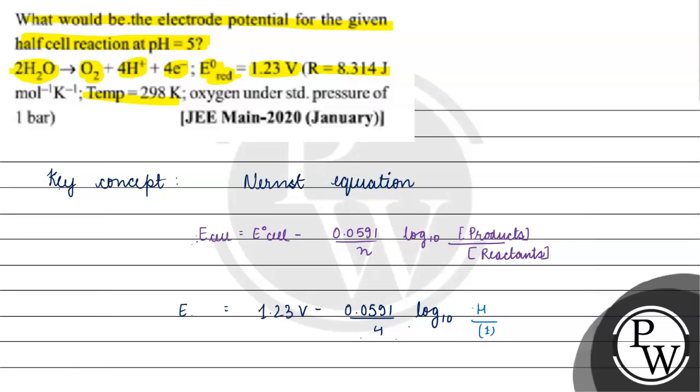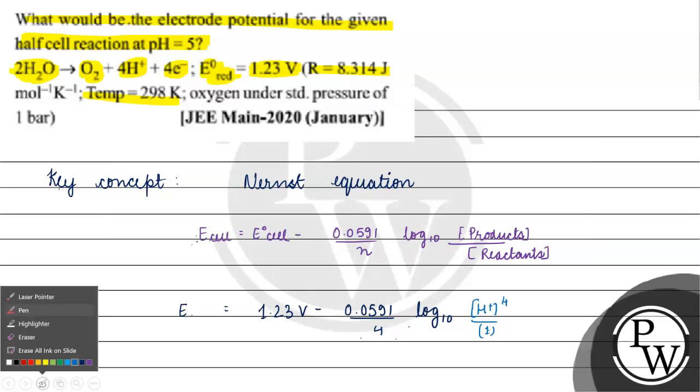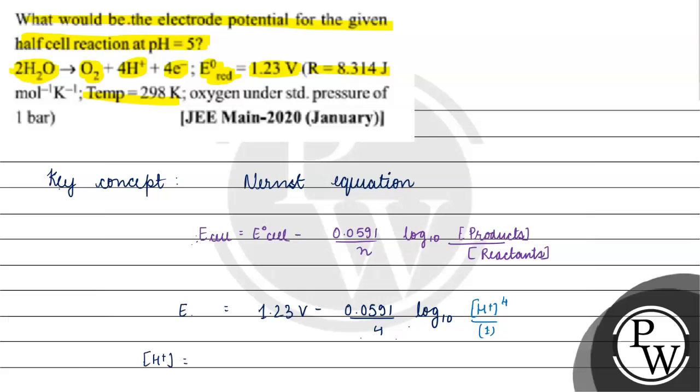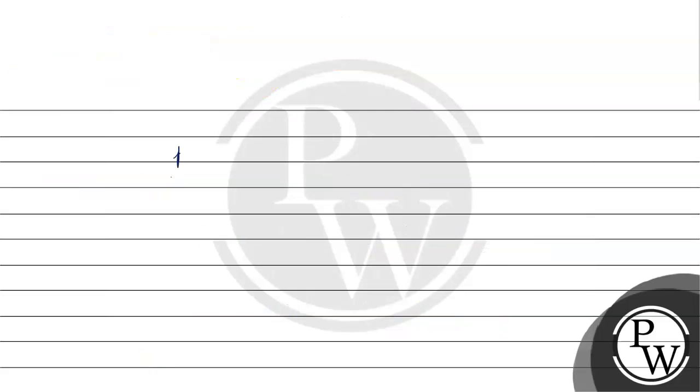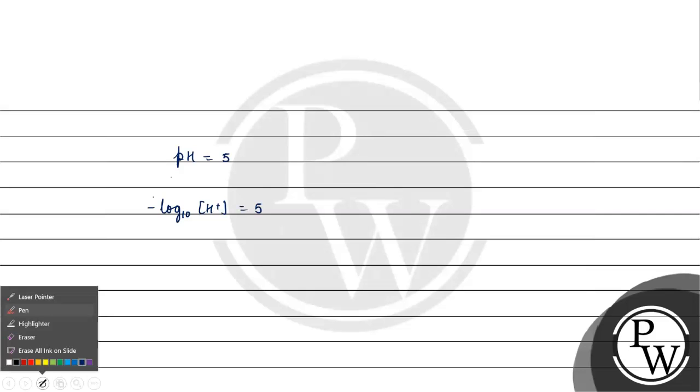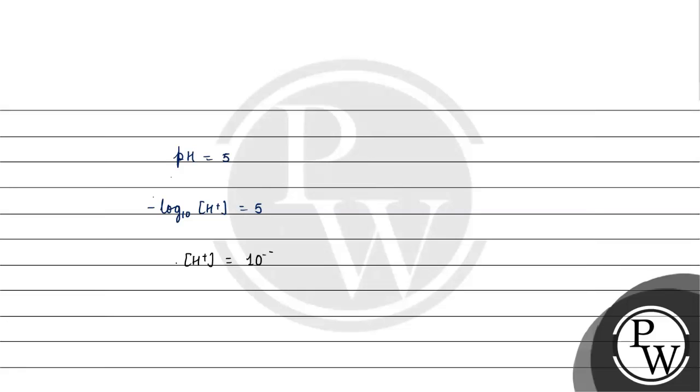What do we have in products? H plus. Its stoichiometric coefficient is 4. Let's talk about concentration of H plus. pH is 5, meaning minus log base 10 H plus equals 5. So H plus will be equal to 10 raised to the power minus 5 molar.